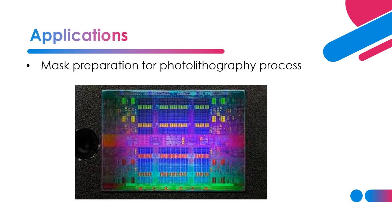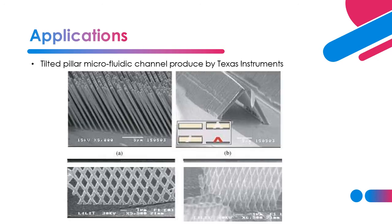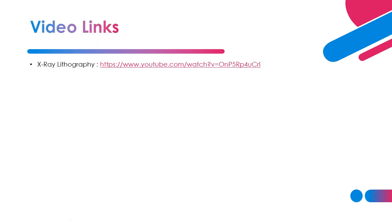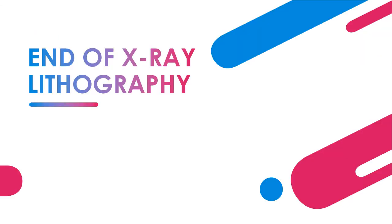Some applications of X-ray lithography include mask preparation for the photolithography process. Another example is a tilted pillar microfluidic channel produced by Texas Instruments, showing an SEM picture of the micro-pillar microfluidic channel with very fine features. A reference video on X-ray lithography is also provided. That's the end of X-ray lithography; the next topic will cover another part of lithography.